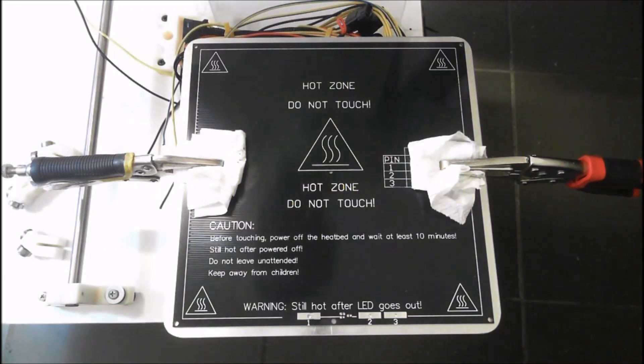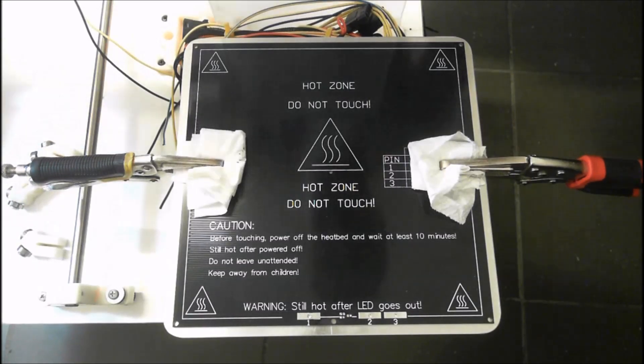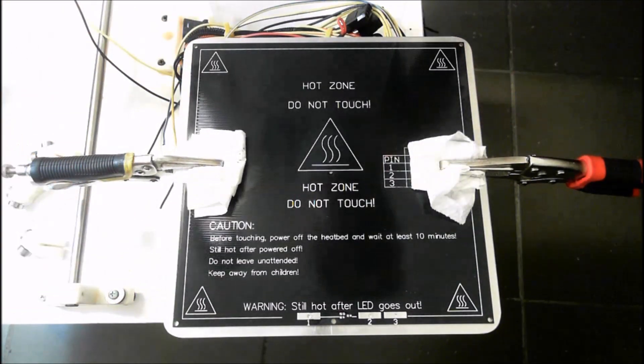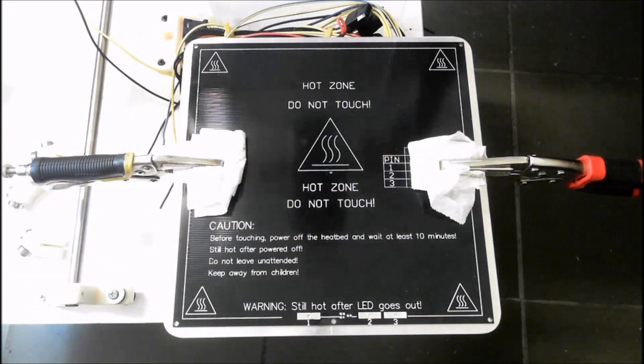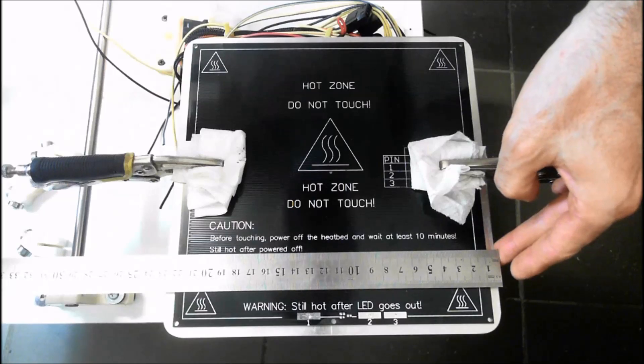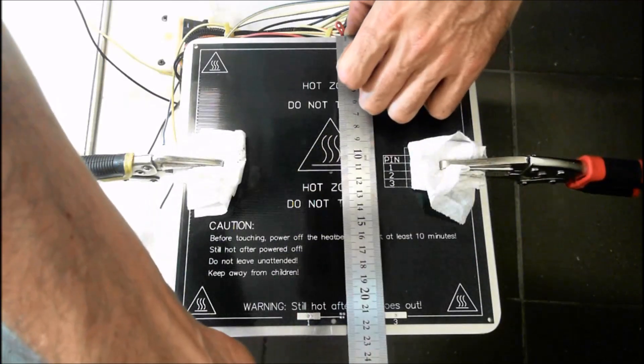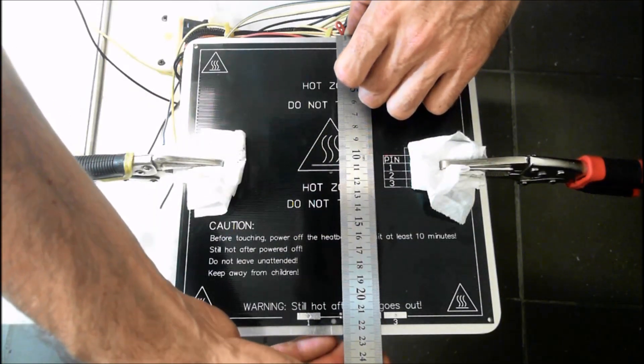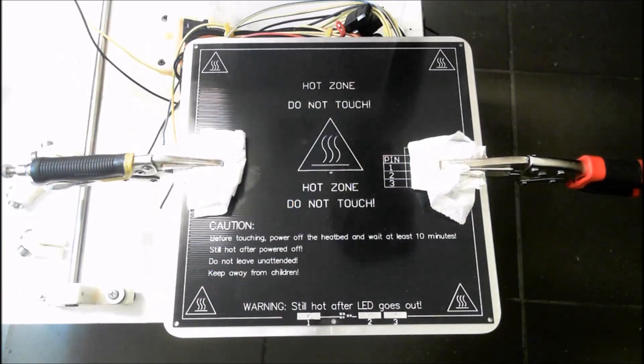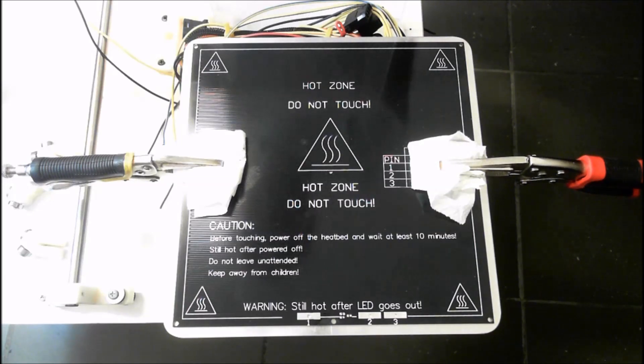We're going to drill the holes for the heat bed corner screws. We've grabbed an aluminum plate around 230 by 225 millimeters approximately, and it's 2.5 millimeters thick. Two millimeters is fine as well; anything more than 2.5 starts to be a little bit heavy, but three would probably work.